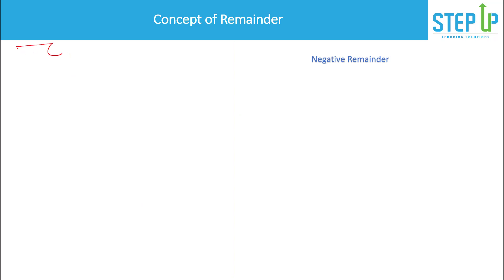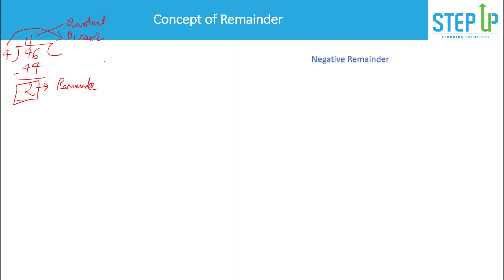Let's take a simple example to illustrate what remainder is. If you have the number 46 and divide it by 4: 4 into 11 is 44, subtract to get 2. So 4 is your divisor, 11 is your quotient, and 2 is your remainder. I can write this number n in the form n = dq + r.